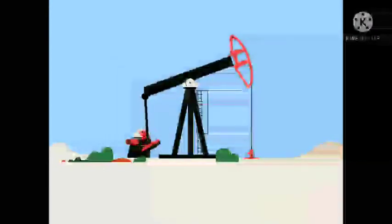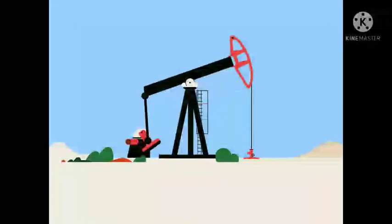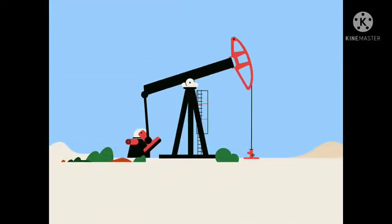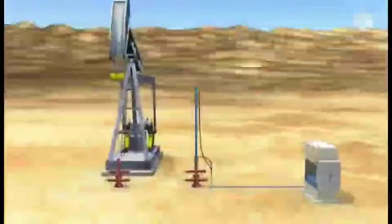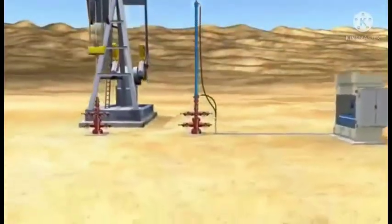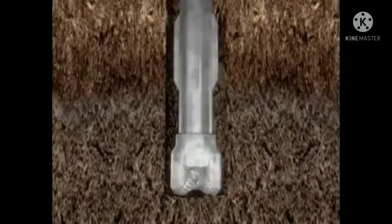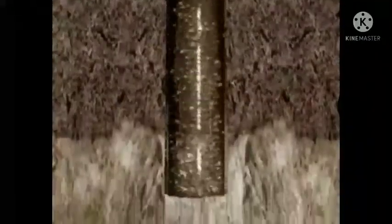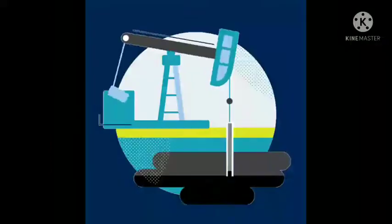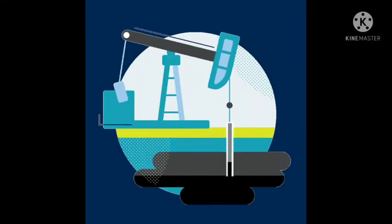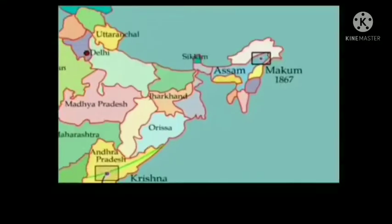The areas where petroleum may be present are located by experts. At such places, petroleum is obtained by drilling holes into the earth's crust by a machine called drilling rigs. Pipes are inserted until they reach the petroleum deposits. Due to high internal pressure of natural gas, crude oil comes out of the pipes, and by using certain pumps, petroleum is pumped out. In India, petroleum is found in Assam, Gujarat, and Bombay High.